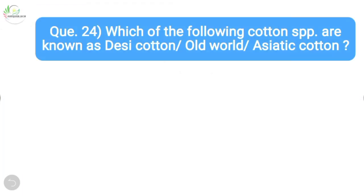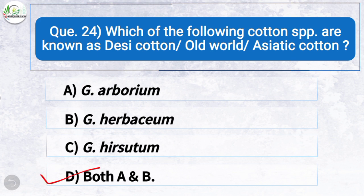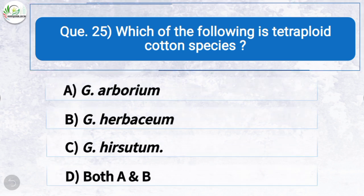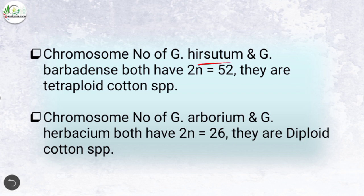Question twenty-four: Which of the following cotton species are known as desi cotton, old world cotton, and Asiatic cotton? The correct answer is option D: both Gossypium arboreum and Gossypium herbaceum. Question twenty-five: Which of the following is a tetraploid cotton species? The correct answer is option C: Gossypium hirsutum. The chromosome number of Gossypium hirsutum and Gossypium barbadense is 2n = 52 (tetraploid), while Gossypium arboreum and Gossypium herbaceum have 2n = 26 (diploid).